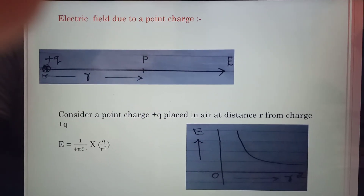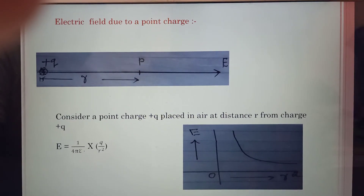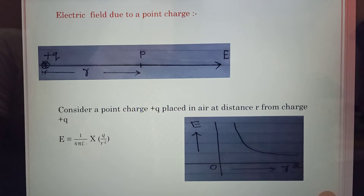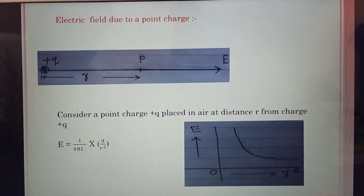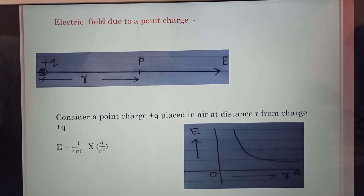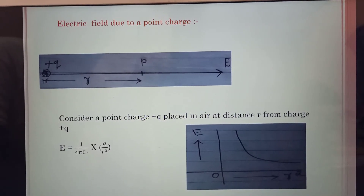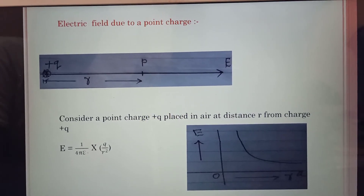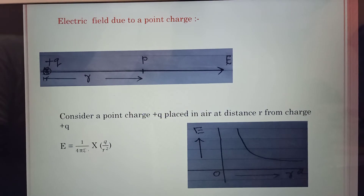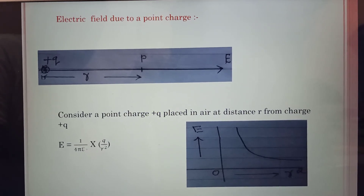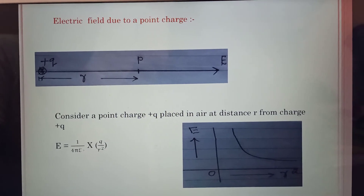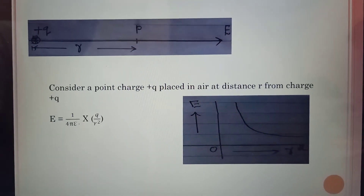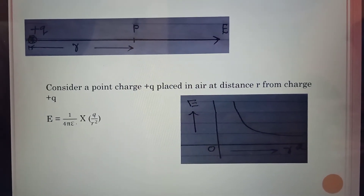Electric field due to a point charge. A point charge +Q is in air at O. The electric field at a point at distance R is directed outward for a positive charge. The mathematical formula is: E = (1 / 4πεr) · (q / R²). This formula is used to calculate the electric field due to a point charge.